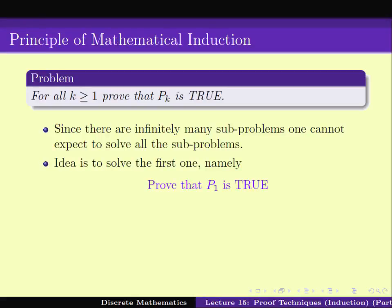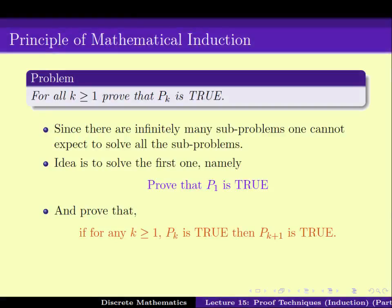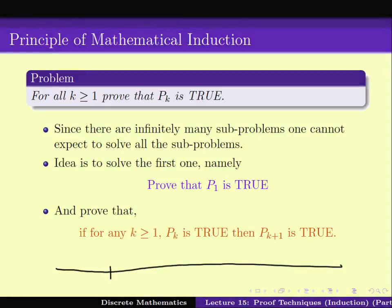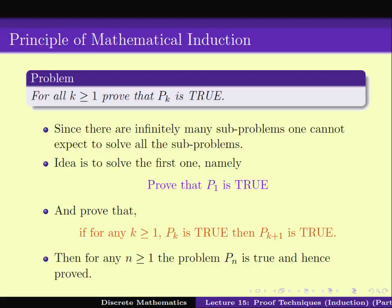One way to handle an infinite number of subproblems is: first, prove that P1 is true; then prove that for any k, if Pk is true, then Pk+1 is true. The idea is that if P1 is true, then this implies P2 is true; if P2 is true, then P3 is true; and so on — so we can keep filling up the whole number line. Meaning, for all k from 1 to infinity, we would be able to prove that this statement is true. So by first proving P1 is true, and then proving Pk implies Pk+1, we would be able to prove that for all n greater than or equal to 1, the problem Pn is true.